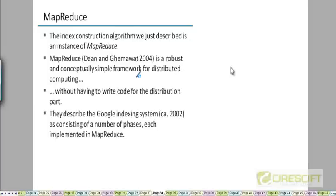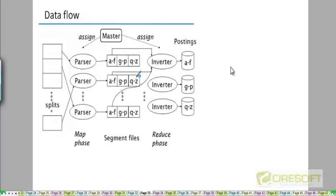Sir, I have a small doubt. The inverter for A to F, suppose it has too many pairs of term and doc IDs. And there is one more parser with G to P. Let's say you have less term and doc ID pairs. So if we have to sort it, so first we need to complete A to F. So how will the master will handle this case?